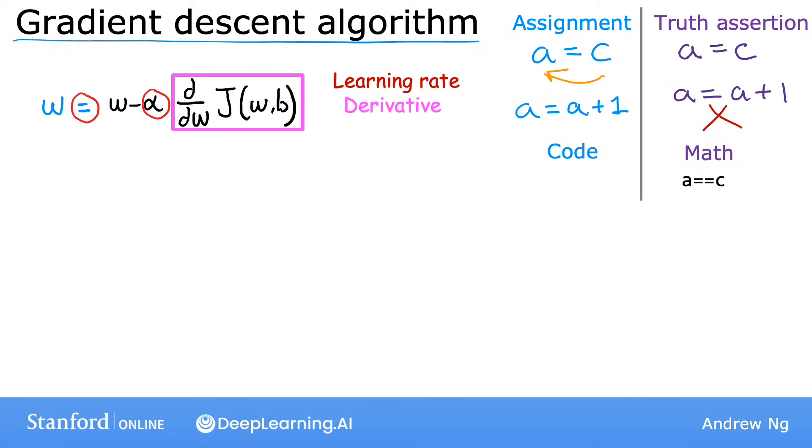One more thing. Remember your model has two parameters, not just w, but also b. So you also have an assignment operation to update the parameter b that looks very similar. b is assigned the old value of b minus the learning rate alpha times this slightly different derivative term d over db of j of wb.